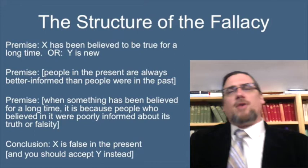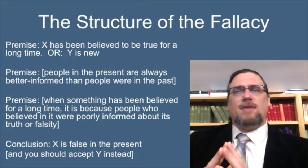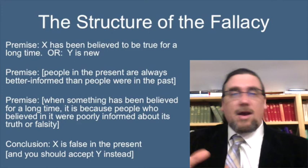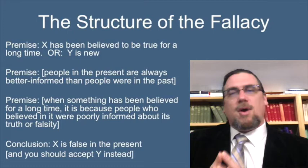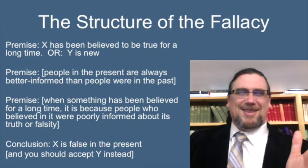The structure of the fallacy really depends on how we're laying it out. One thing that's going to come up is saying X has been believed to be true for a long time, or Y is brand new, and then there are going to be some hidden premises — the assumptions being made, the implicit premises. One of them is that people in the present are always better informed than people were in the past.